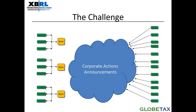This is Len Lipton from Globetax. This diagram shows today's process where the issuer communicates the corporate action through a press release or by alerting their transfer agent. This might work for mandatory corporate action events, but with voluntary events, the manual re-keying required before a message can get out means intermediaries and investors may not get the notice fast enough to take appropriate action.